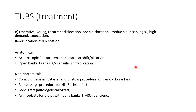Operative indications include young patients, recurrent dislocation, open dislocation, irreducible dislocation, disabling instability, and high-demand patients. Re-dislocation after surgery is less than 10%. Surgery can be divided into anatomical — arthroscopic Bankart repair, open or arthroscopic — and non-anatomical, such as coracoid transfer (Latarjet and Bristow procedure), remplissage for Hill-Sachs defect, bone graft (autologous or allograft), and arthroplasty for older patients with bony defect more than 40%.